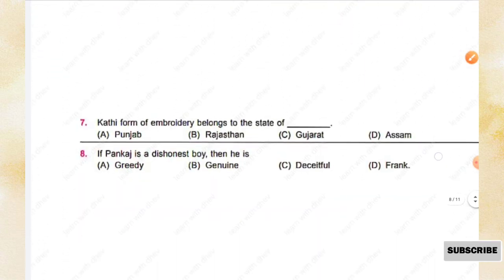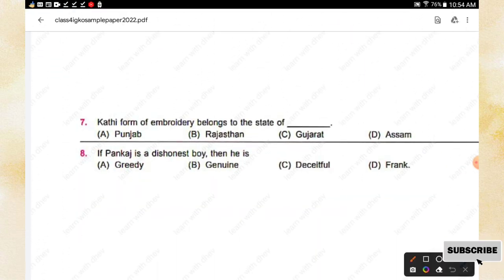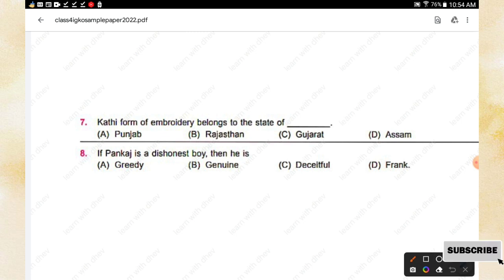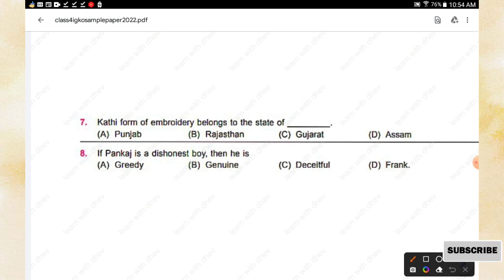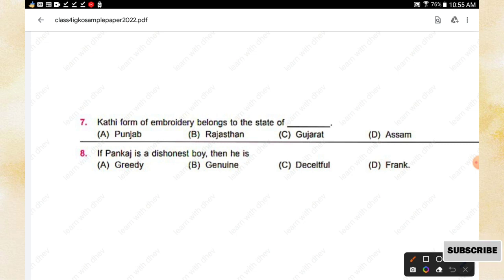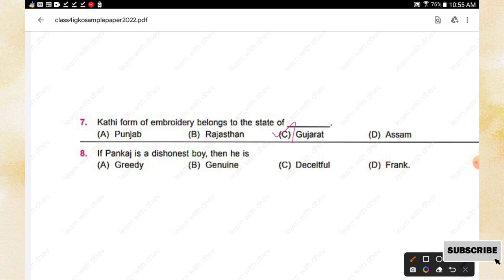Question number seven: Kati, a form of embroidery, belongs to which state? Options are: Punjab, Rajasthan, Gujarat, Assam. The right answer is option C, Gujarat.